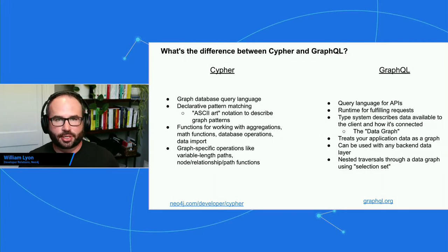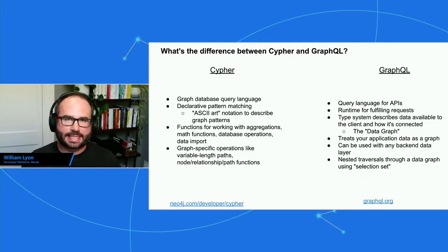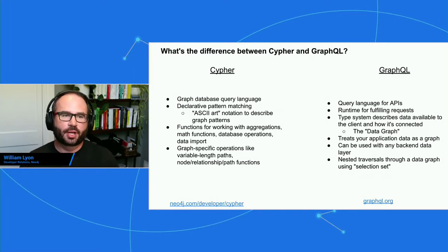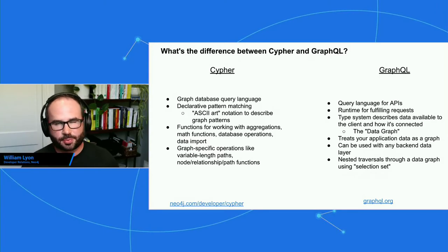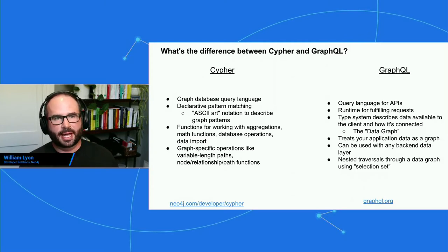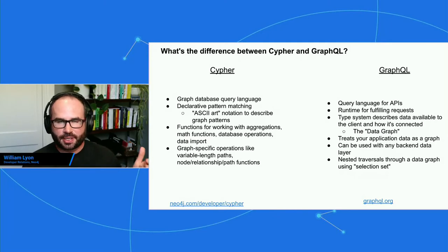Compare that to GraphQL, which is not a database query language — rather it's a query language for APIs, and also a runtime for fulfilling these requests. With GraphQL, we have a type system that clearly defines the data available to API clients and how that data is connected — this is the data graph. We can use any backend system to resolve data, federate from multiple sources, multiple databases, and other APIs. We traverse this data graph via a nested structure called a selection set.